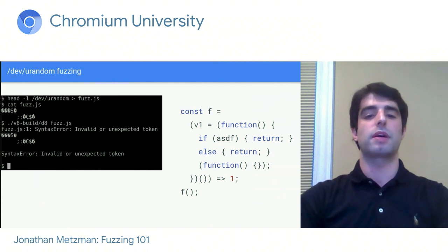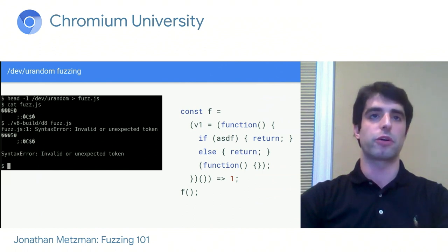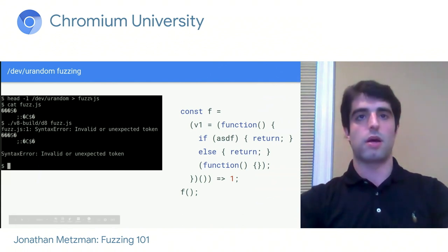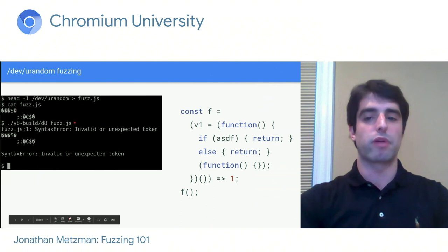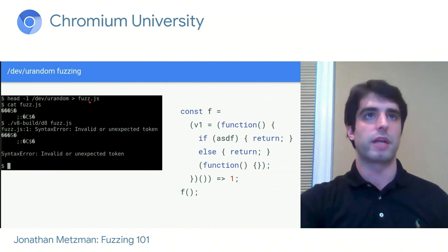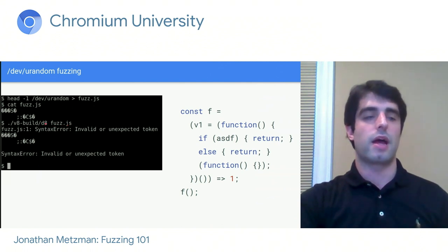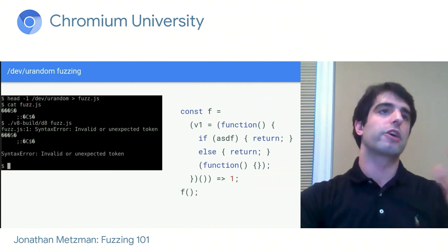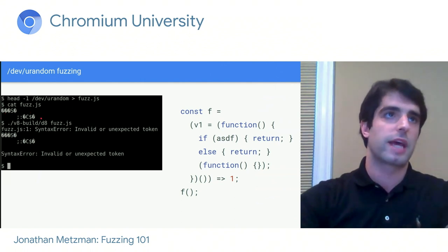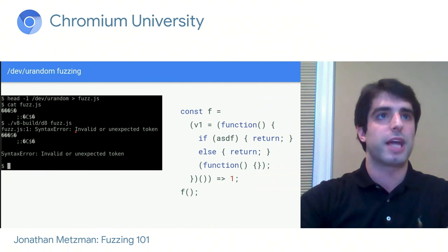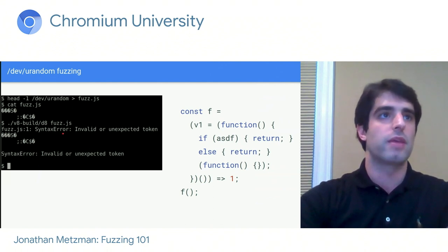Let's use a concrete example of something that you can fuzz in Chromium. I'm going to use V8, which is Chromium's JavaScript engine — basically the interpreter for JavaScript when you're browsing the web. On the left, you can see some very primitive fuzzing I did of V8. I basically took some random data from /dev/urandom and put it in a file, fuzz.js, and then ran V8 on that file. As you can see, the contents look nothing like actual JavaScript, so V8 says this is a syntax error. It fails to parse the file and quits out immediately.